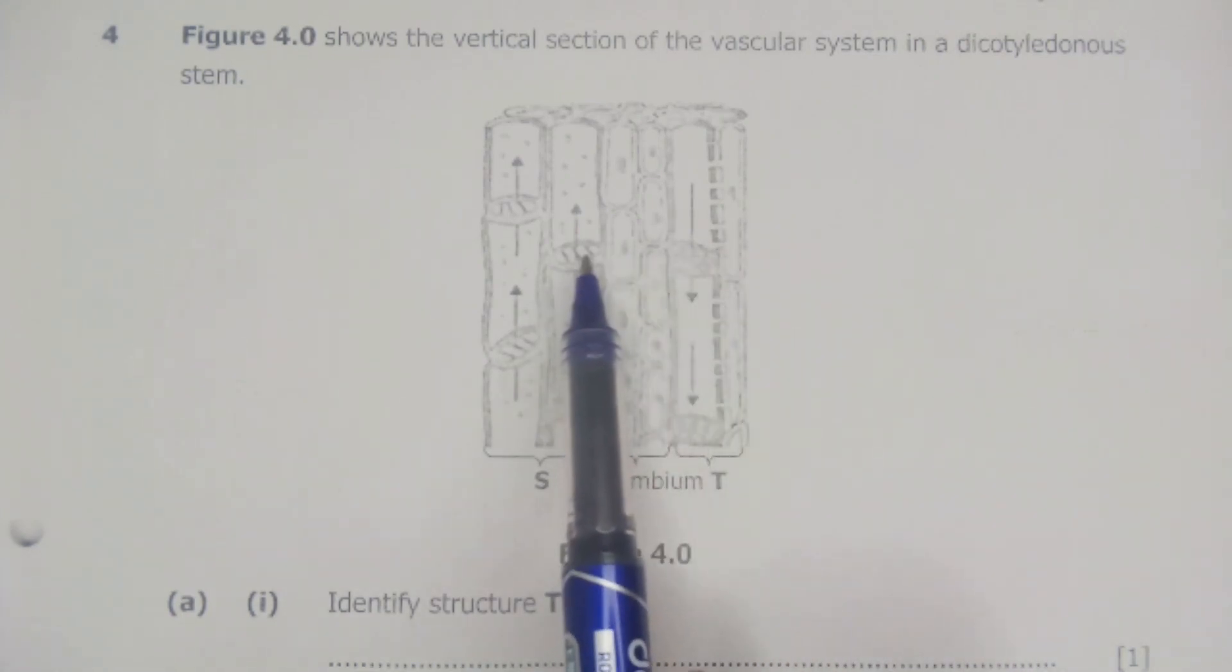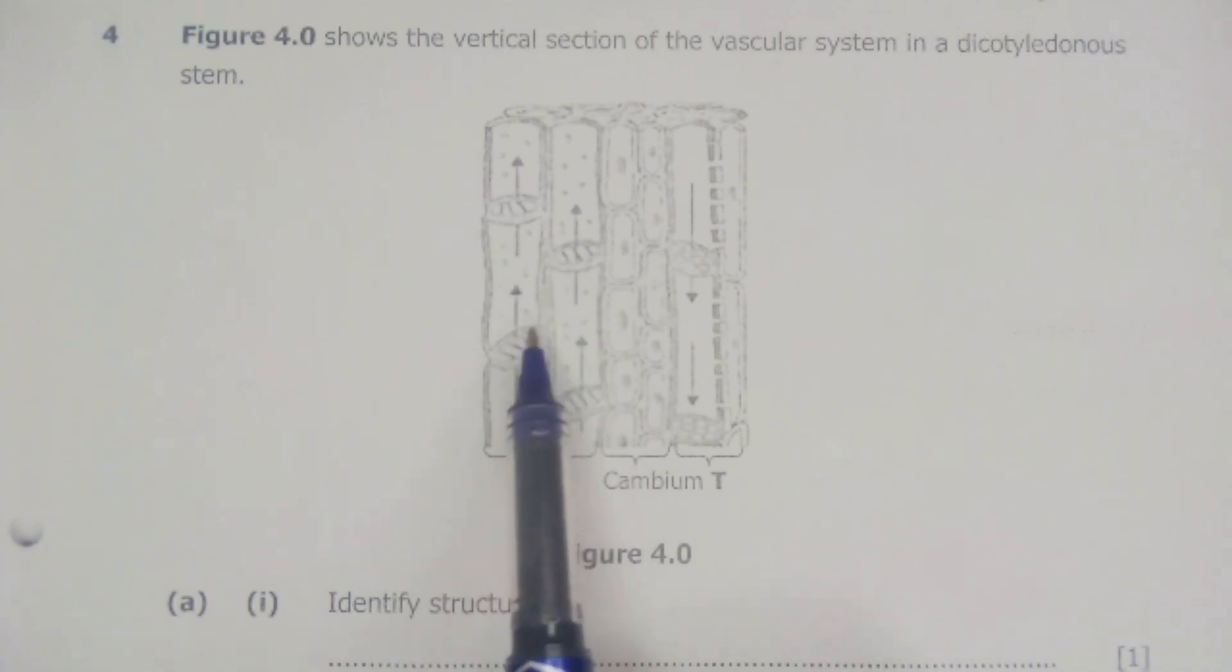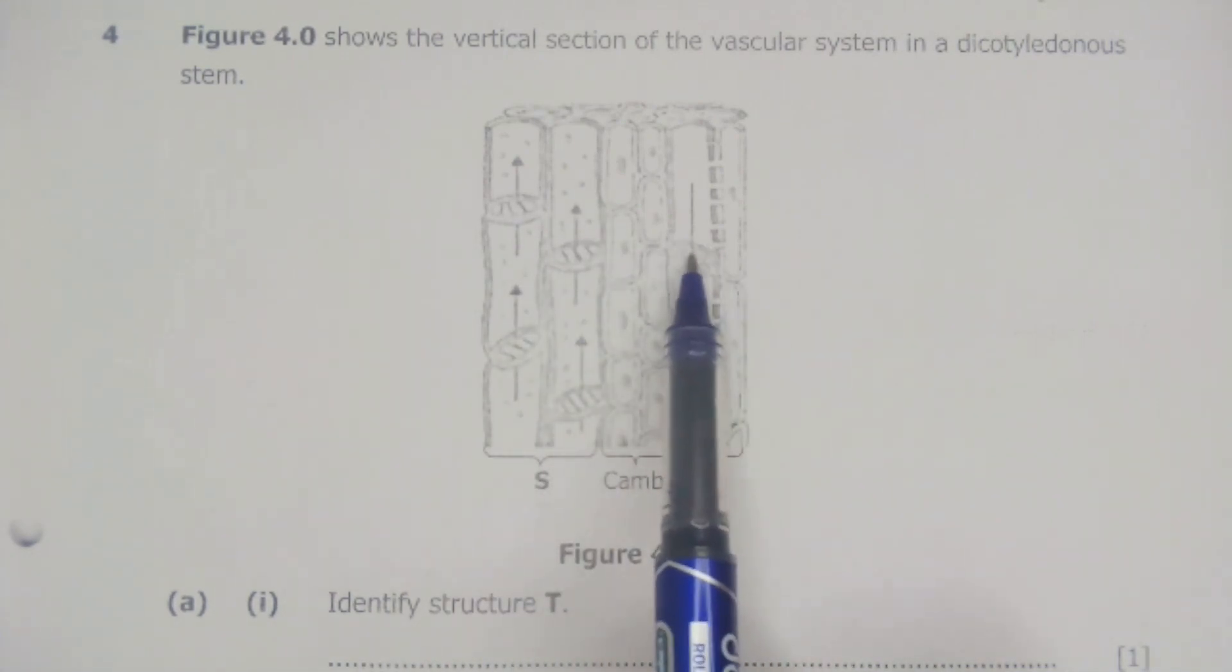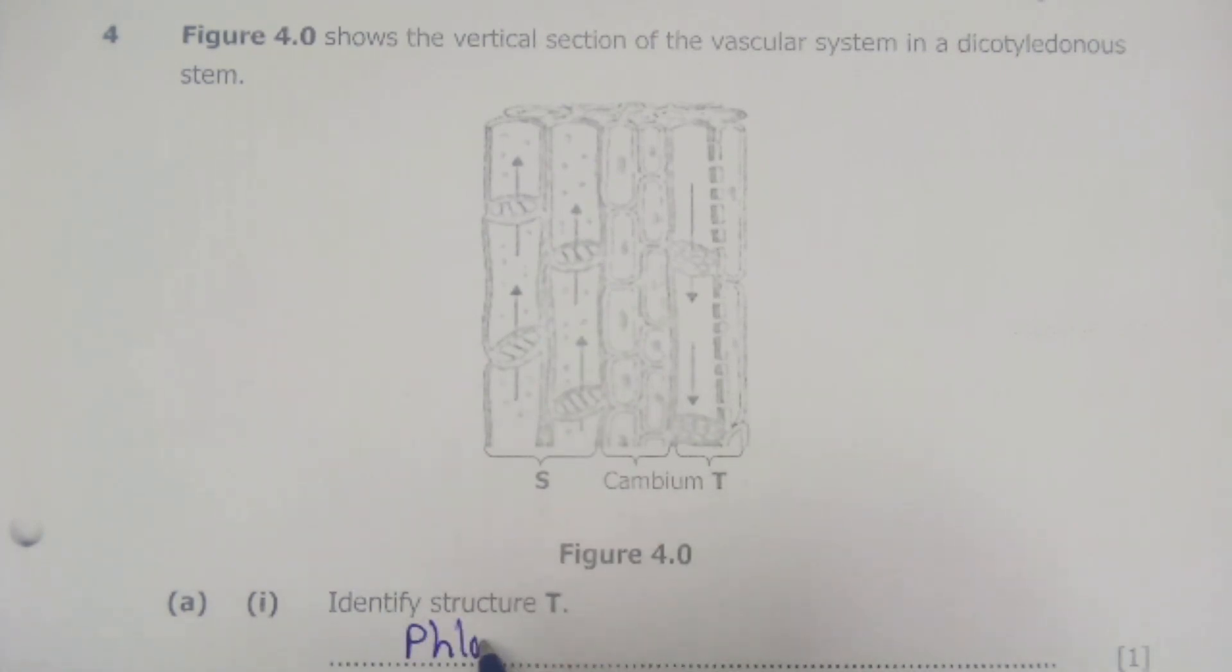Since here the demarcations are much larger, we can assume these are xylems but here you can see tiny perforations or holes. So that makes our T our phloem vessel. So T, that's simply the phloem. That was the solution to question number A1.